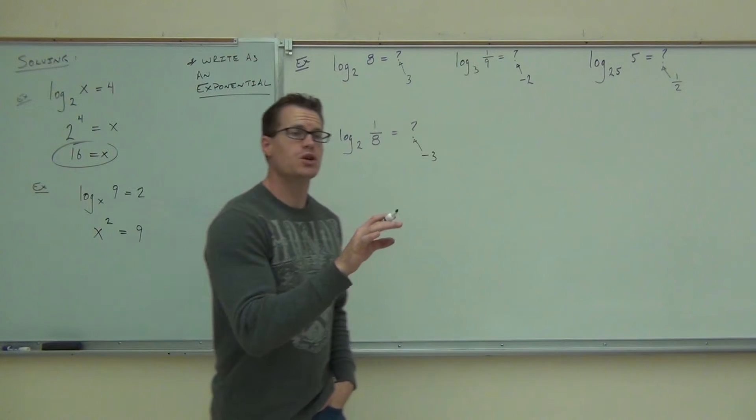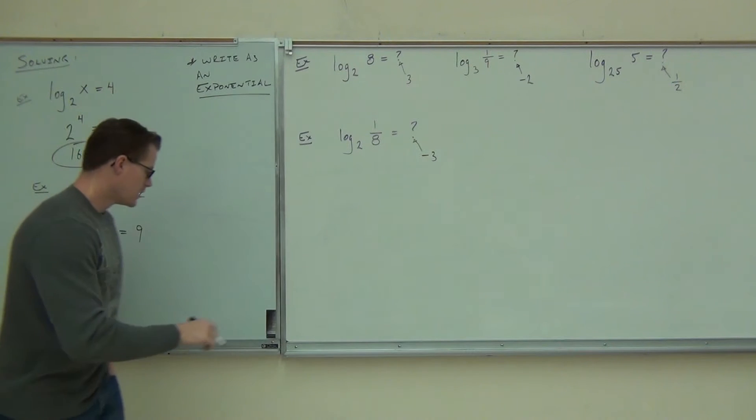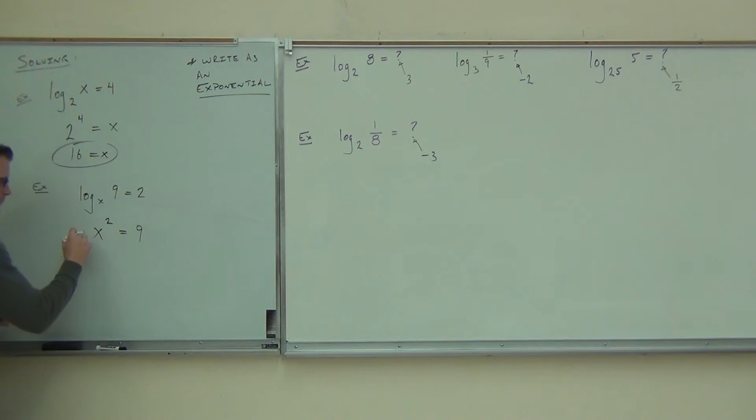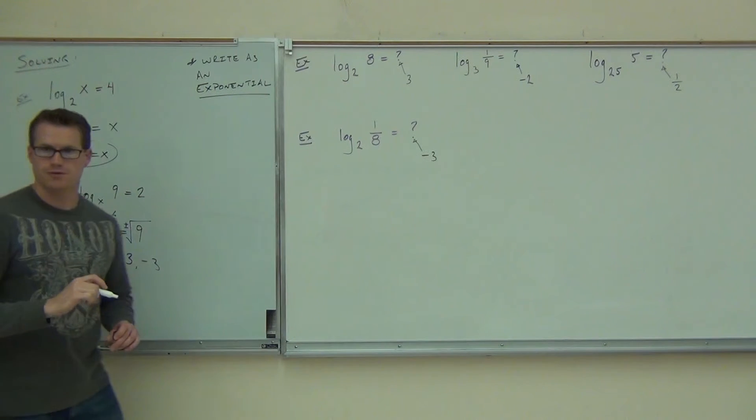Now, I want you to note something on the board here real quick. If you take a square root of this, like that, you're supposed to have what here? Good. And that would give you x equals 3 and negative 3. Do you follow me?